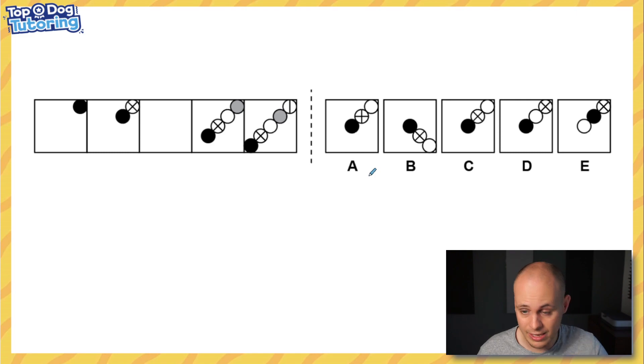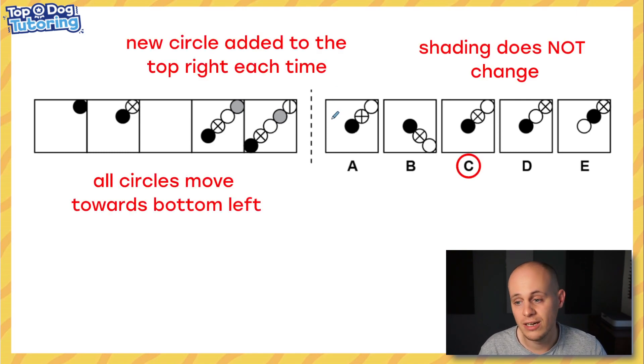Anyway, onto the video. Yesterday Dylan left you with this question in sequences. It's a great question and the answer was C, simply because every time a new circle is added in the top right it just shunts everything else down. It goes always in the same order: black, then black, then cross, then black, then cross. We can tell from here it'll be white, black, cross, white, gray, and then you get the line as well.